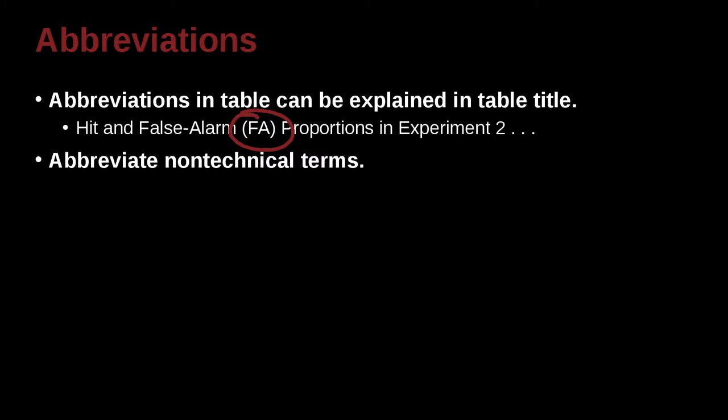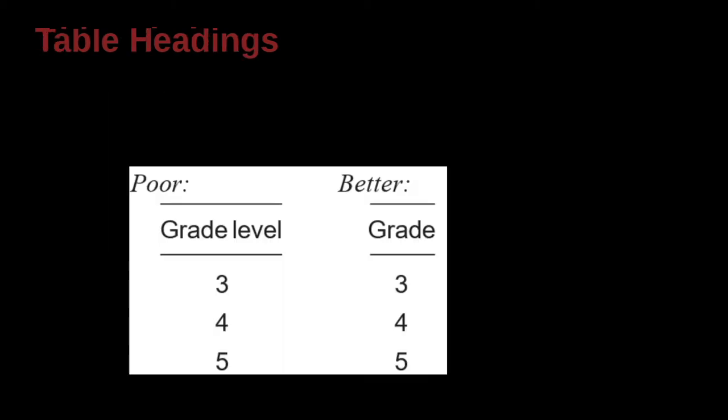You can abbreviate non-technical terms. So for example, you could say No. for number. You could say percent sign for percent. For statistics, you could write M. You could write SD, standard deviation. You could write chi-squared. So you can use these ways to try to make your table title a little bit shorter.